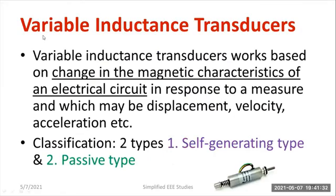Let us understand what we mean by variable inductance transducer. The variable inductance transducer is mainly working based on the principle of variable inductance. It works based on changing the magnetic characteristics of an electrical circuit in response to the measurand, and this may be mechanical quantities such as displacement, velocity, acceleration, etc.